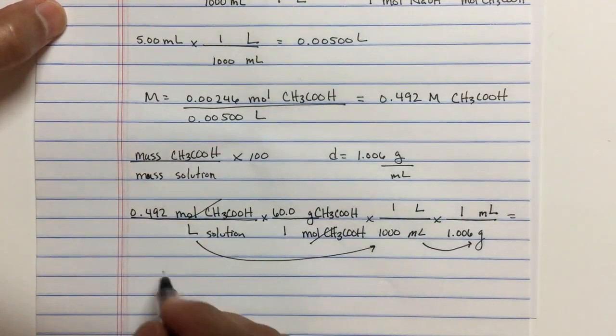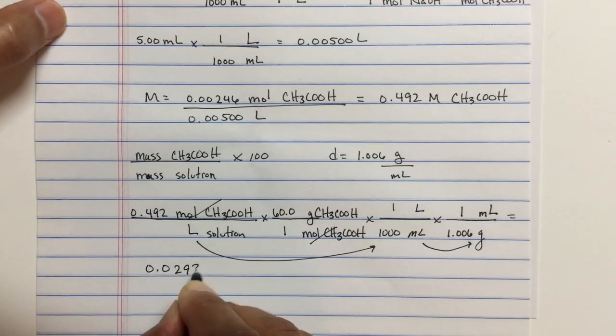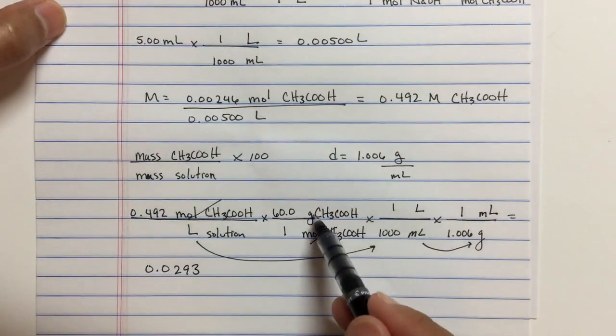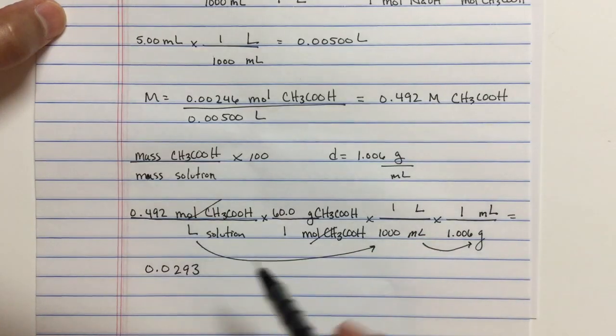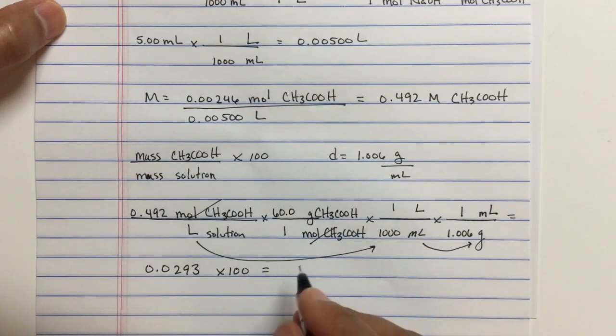And so, the answer we get there is 0.0293. Now, notice you've got gram over gram. So, this is just the ratio. Times 100. 2.93 percent acetic acid by mass.